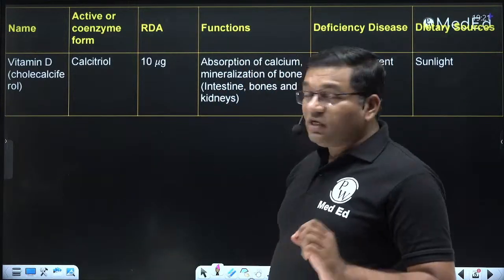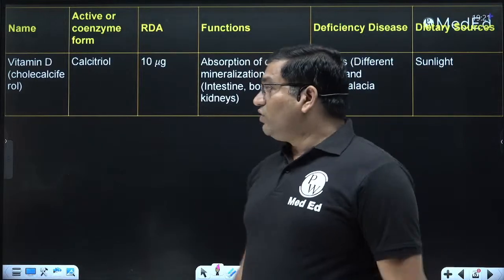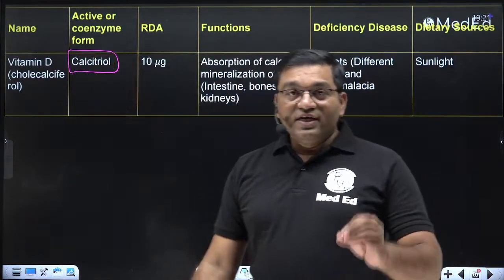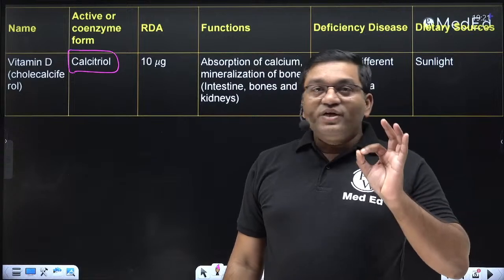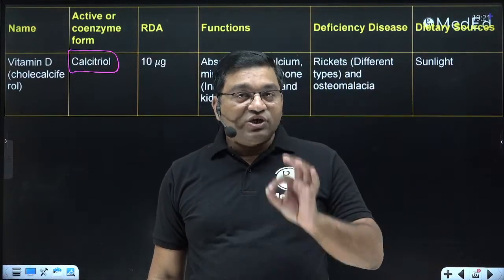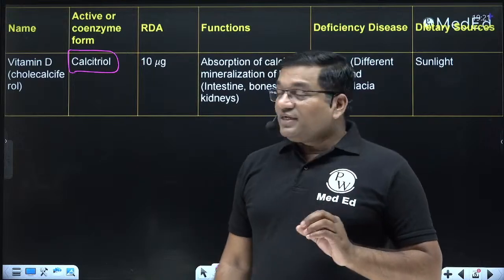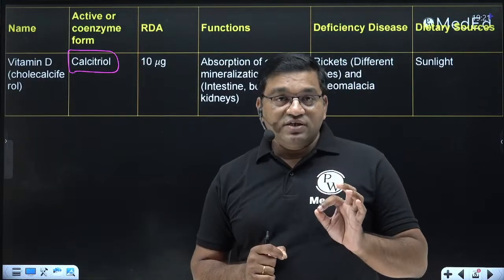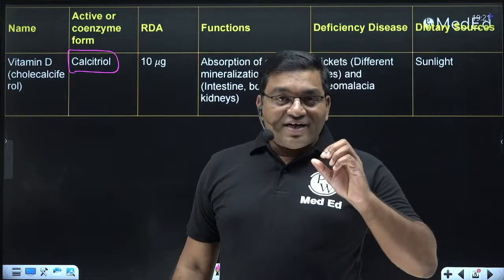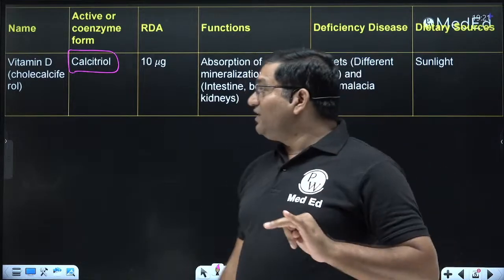The active form of vitamin D is 1,25-dihydroxycholecalciferol, also known as calcitriol. It is also called a hormone because it acts like a steroid hormone — it has intracellular receptors and three target organs: bone, intestine, and kidney. It is responsible for regulation of calcium level.